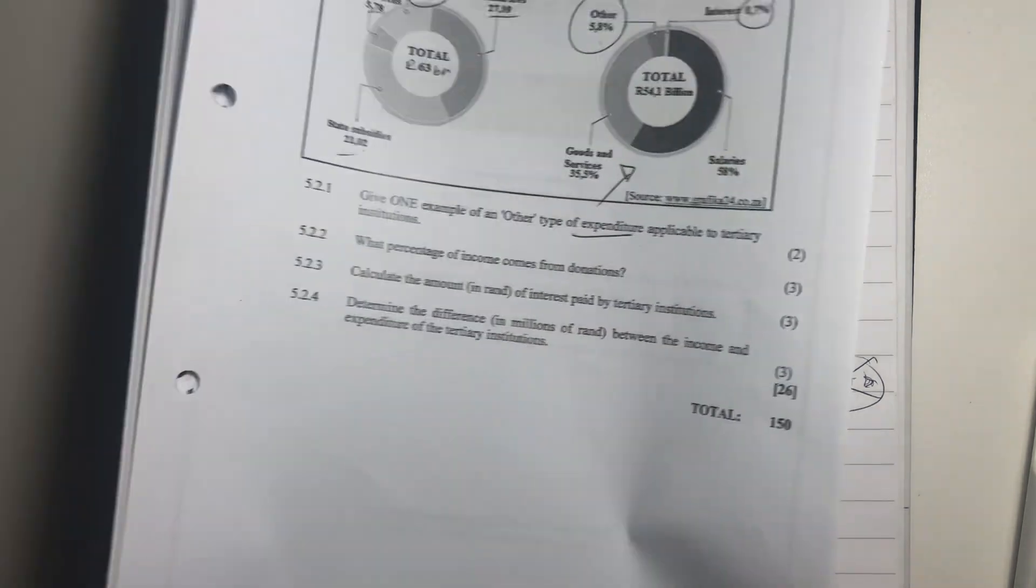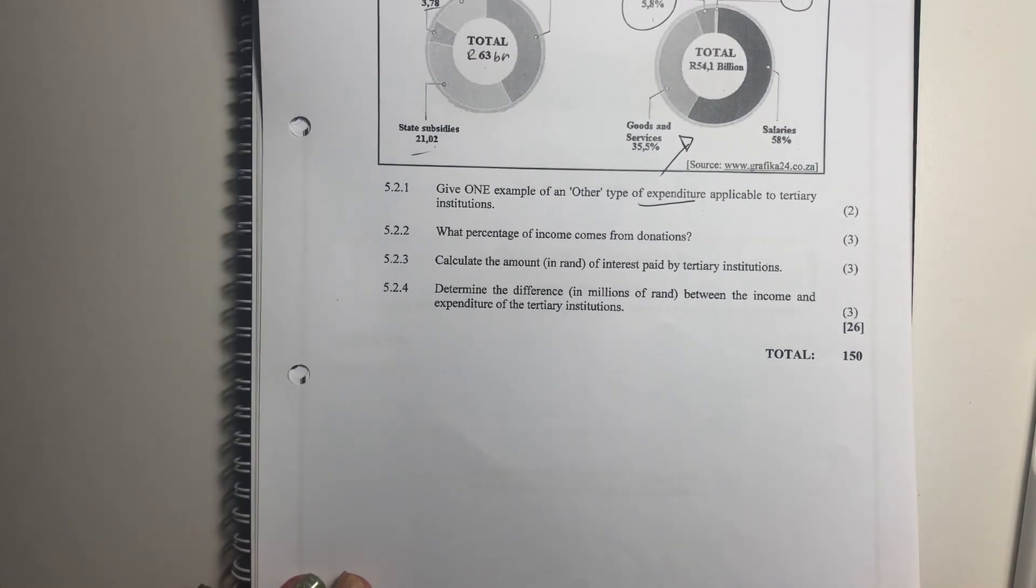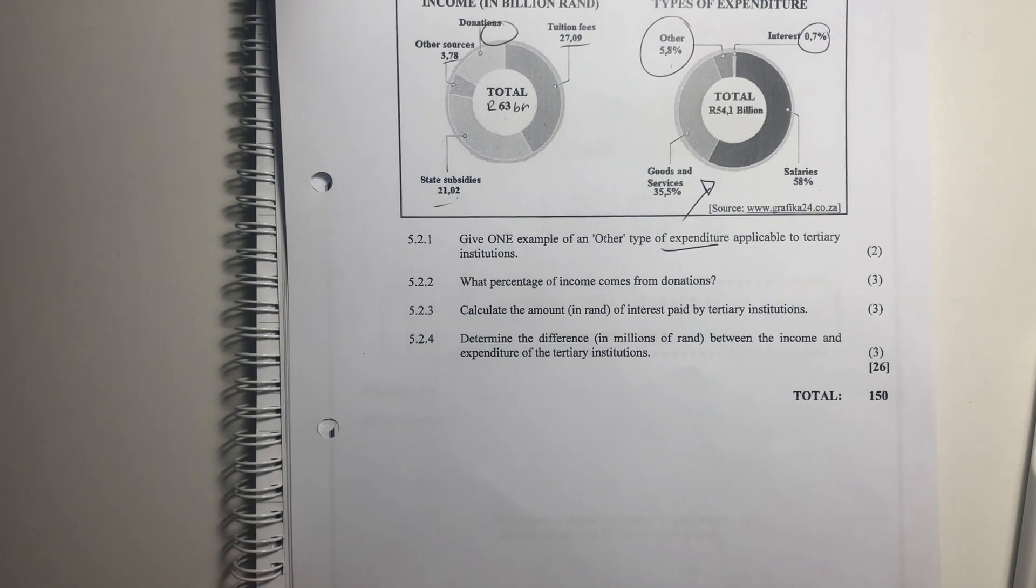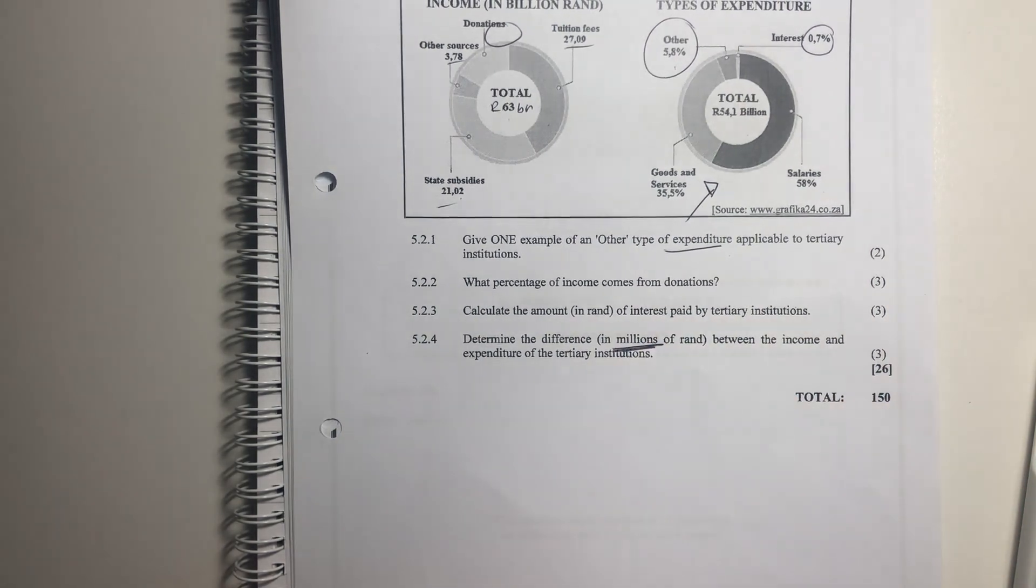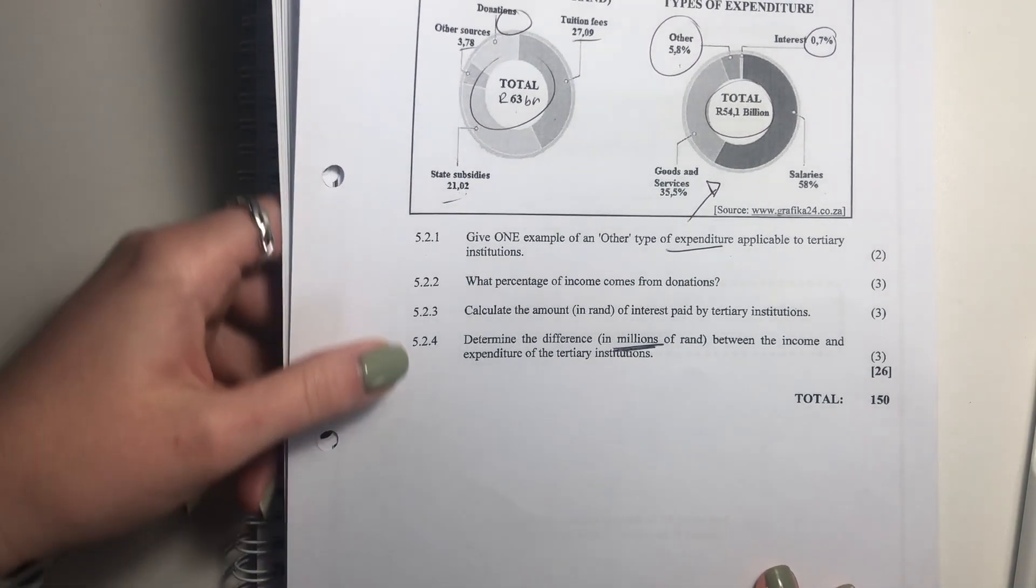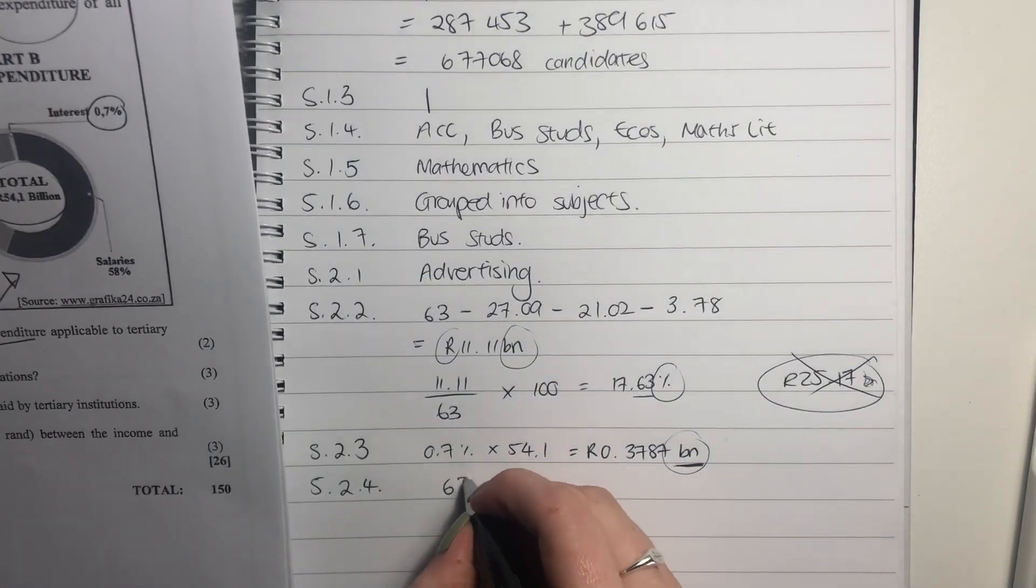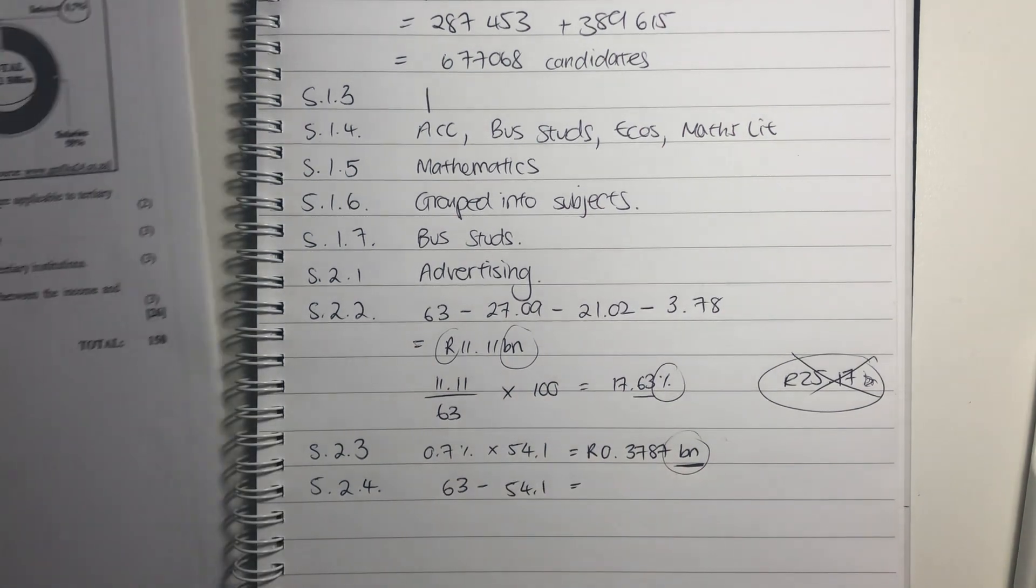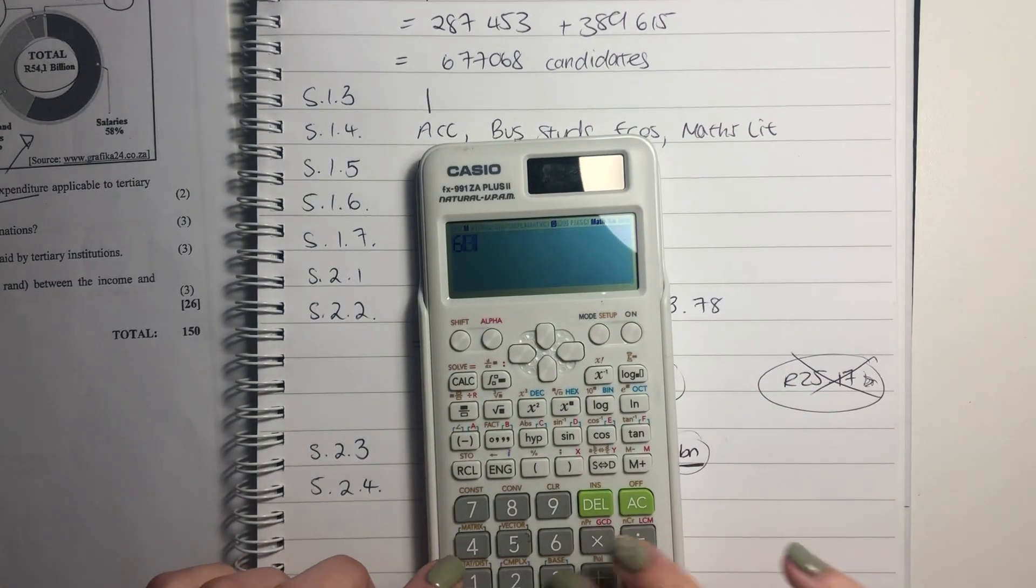Last question of this paper, yay. Determine the difference, in millions of rands between the income and the expenditure of the tertiary institution. Now, this is important. It said in millions. Currently, it's in billions. So you can't just be writing your answer in terms of billions and expect to get all your marks. So be careful. So we know that it's 63 billion minus 54.1 billion. We know that's the case. So we just put that in.